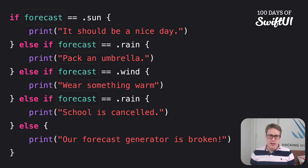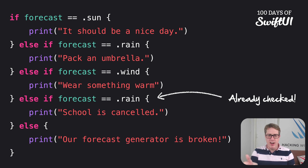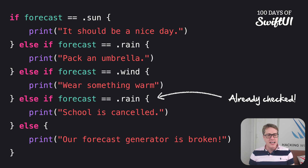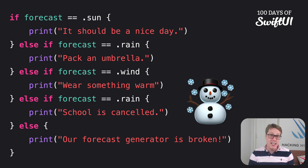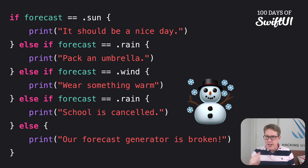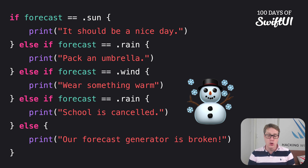I've accidentally checked rain twice — rain: pack an umbrella, and rain: school is cancelled. That was a mistake. I meant to check snow. Snow is currently not being checked, so we're missing functionality — schools being cancelled by accident. We can solve all three of these problems using a different way of checking conditions called switch.